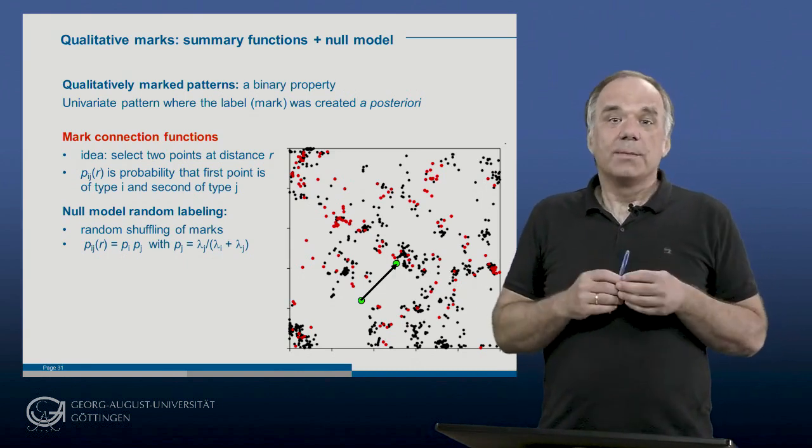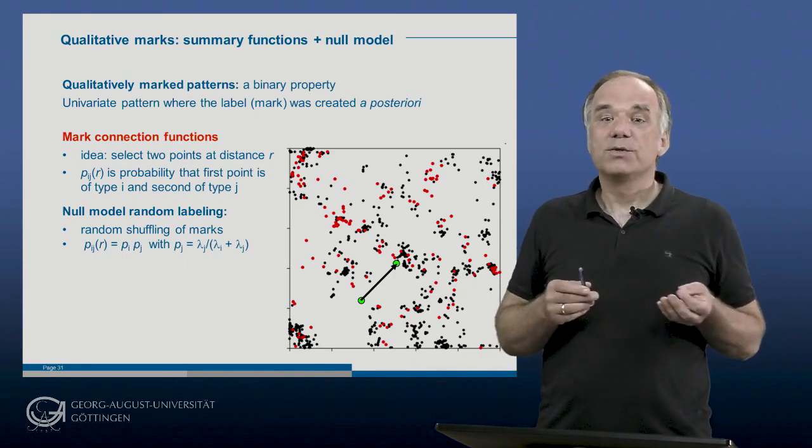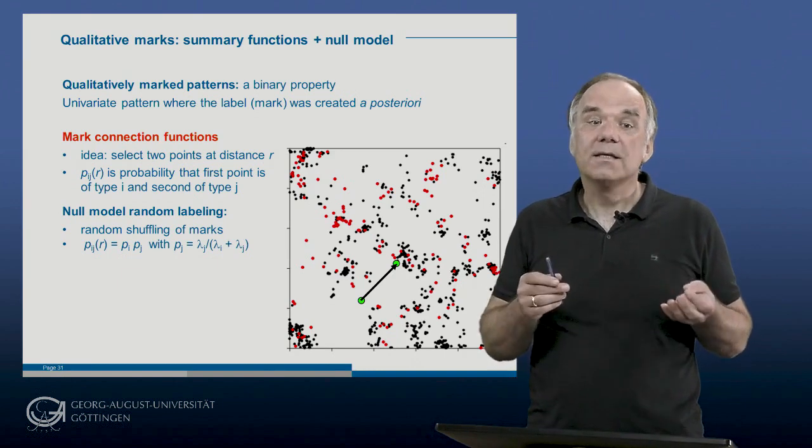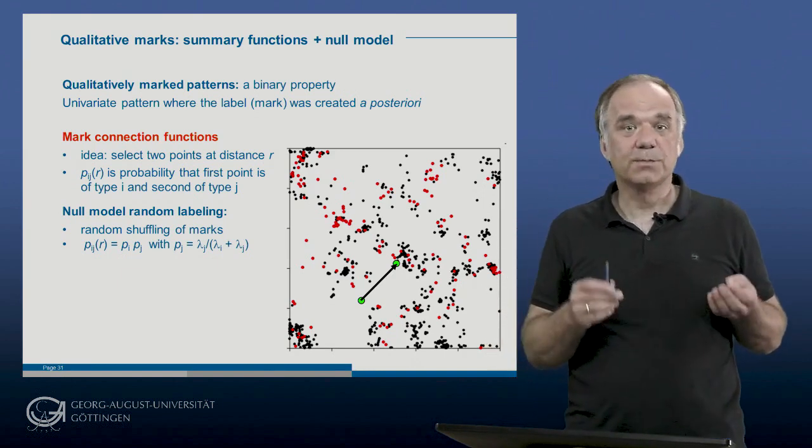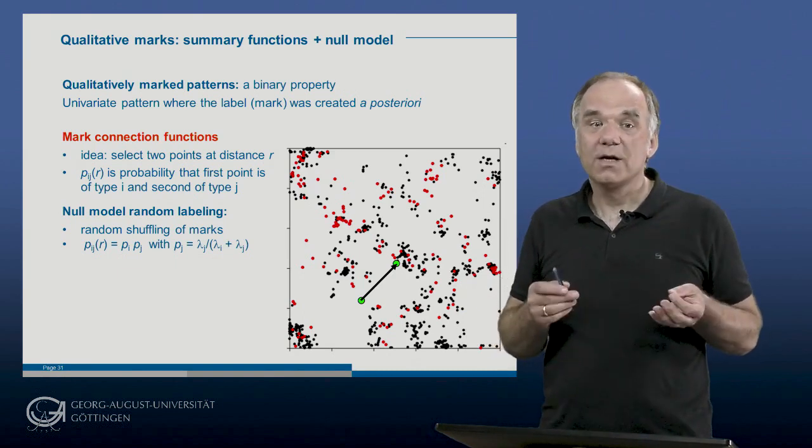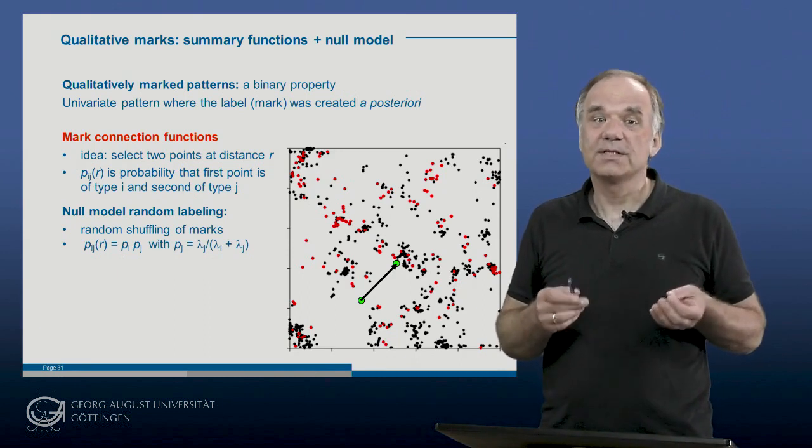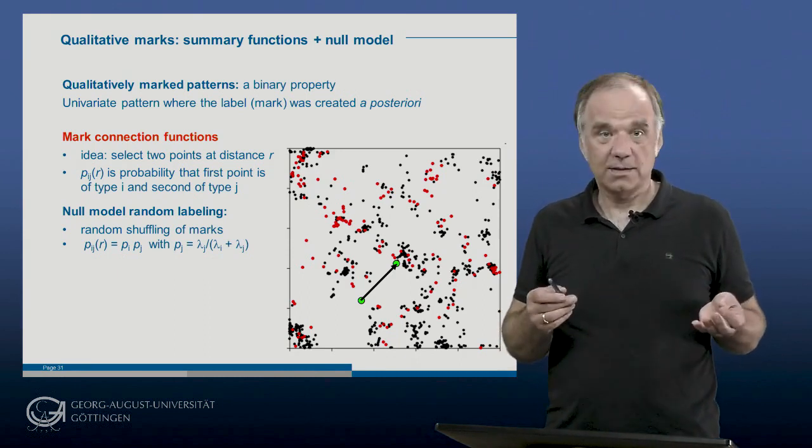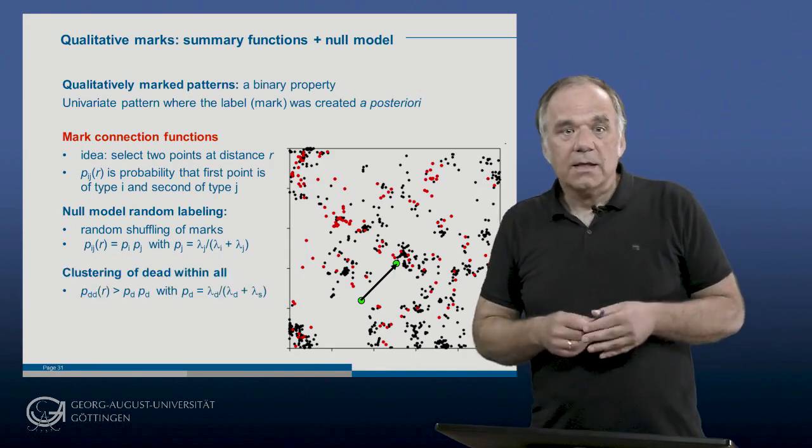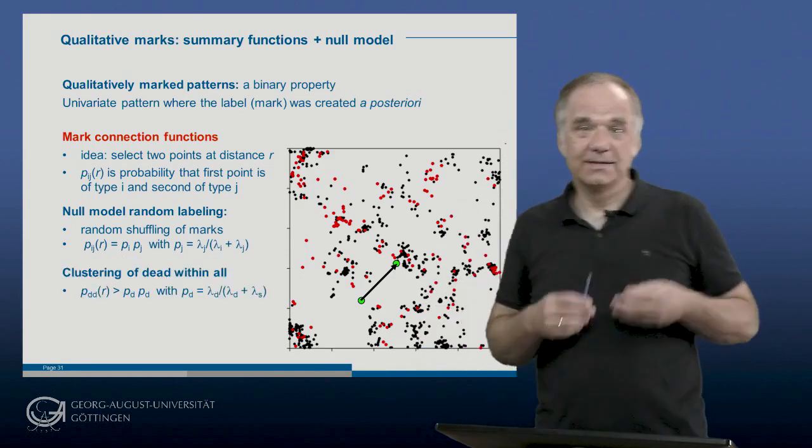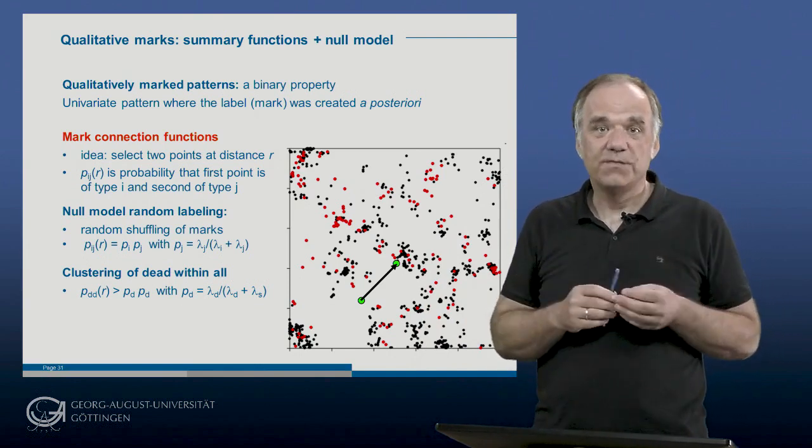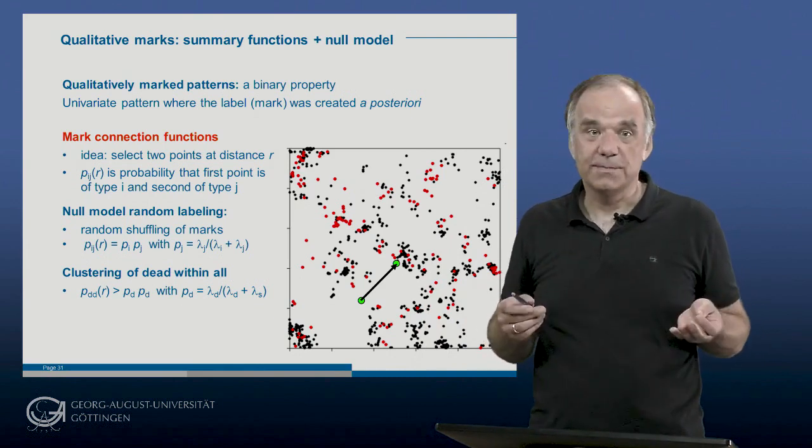Under random labeling, we have spatial independence of the mark values. The probability that one point has the mark D for dead is simply the proportion of dead trees. The mark connection function of the null model is then the probability that both trees are dead, which is simply the product PD times PD. Dead trees cluster together if the mark connection function is larger than PD times PD.